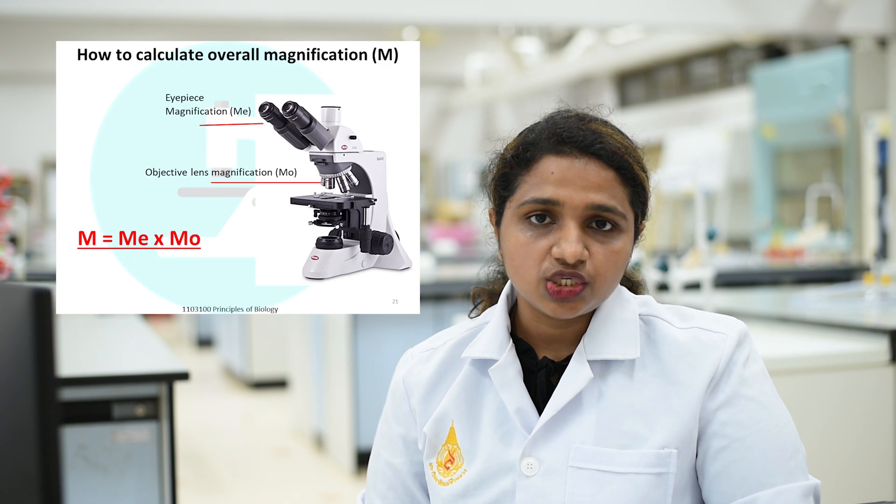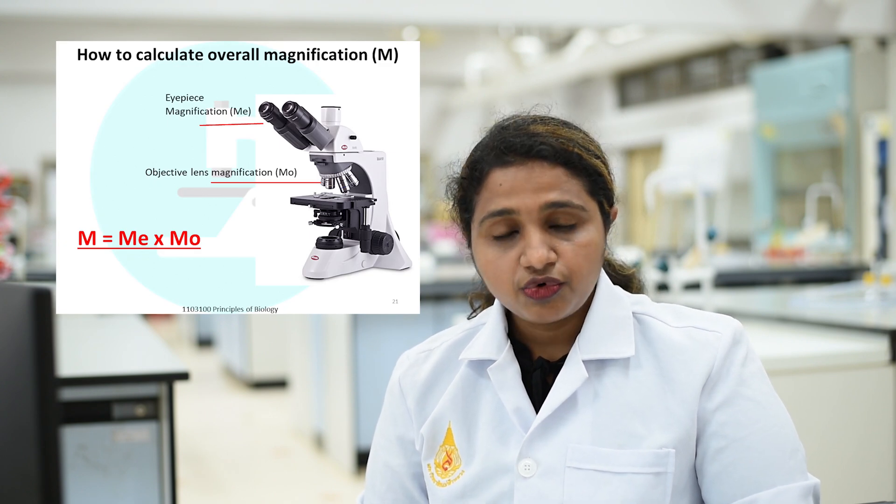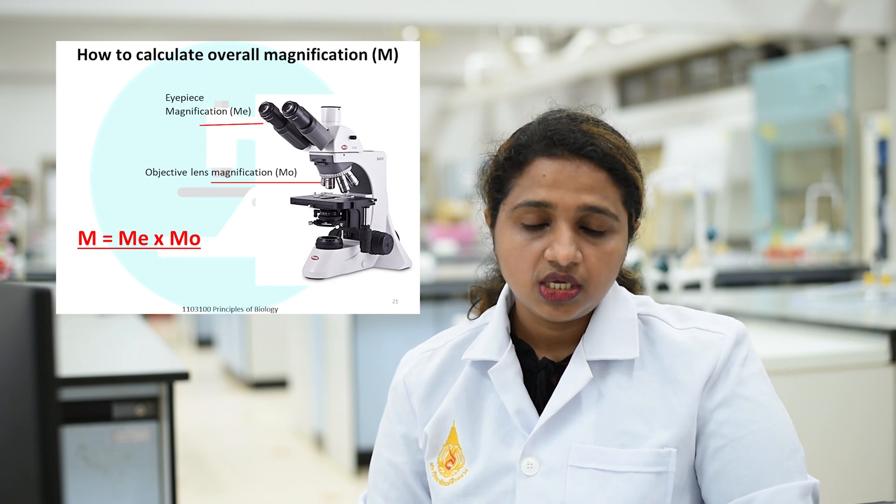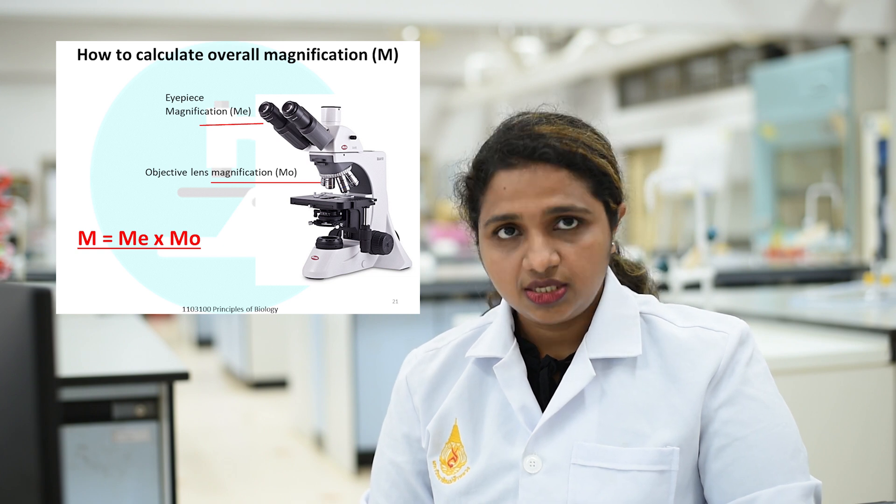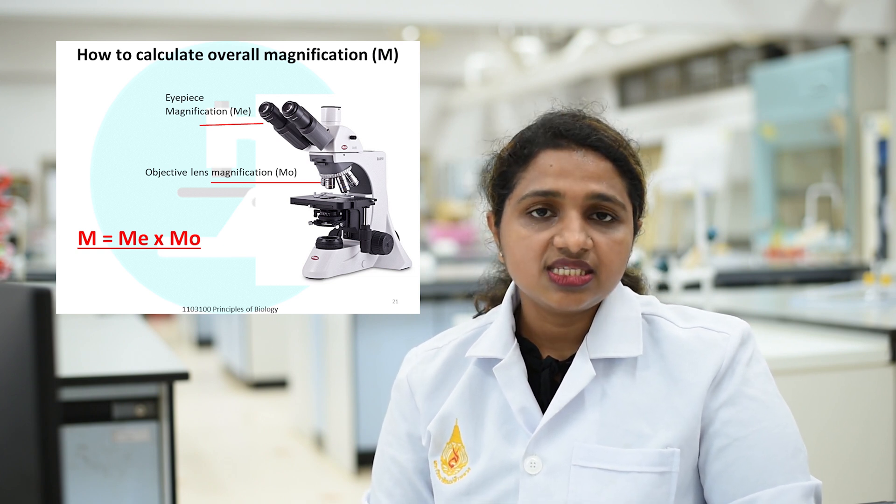When you look through the microscope, you see an increased image of the object. You need to calculate the overall magnification the microscope produces. For that, you need to know the magnification of the eyepiece lens and the magnification of the objective lens. The overall magnification equals the magnification of the eyepiece lens multiplied by the magnification of the objective lens. The magnification power is embedded on each of these lenses.